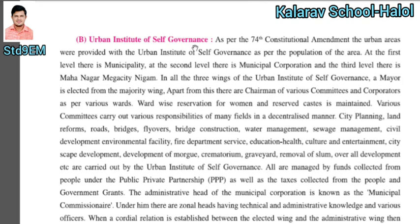Urban institutes of self-government were provided as per the 74th constitutional amendment in urban areas, based on population. At the first level there is a municipality, at the second level municipal corporation, and at the third level Mahanagar Palika Nigam. There are three wings of urban institute self-government. A mayor is elected from the majority wing.